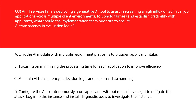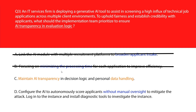Now let's look at this question. Option A says link the AI module with multiple recruitment platforms to broaden applicant intake. Broadening intake doesn't influence how fairly the AI evaluates candidates — incorrect. Option B says focusing on minimizing the processing time for each application to improve efficiency. Reducing processing time improves throughput but doesn't address trust or fairness in decision making. The question is all about AI transparency and fairness, so this is out.